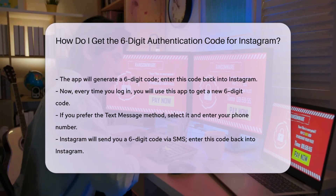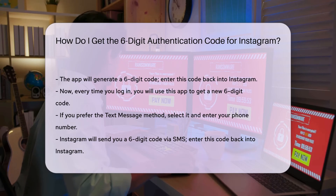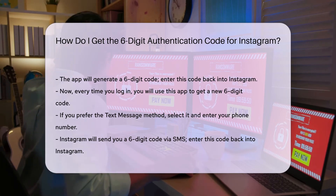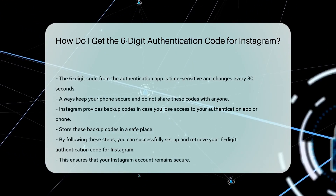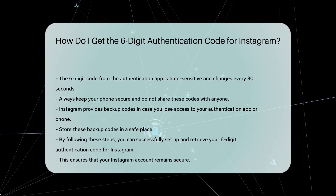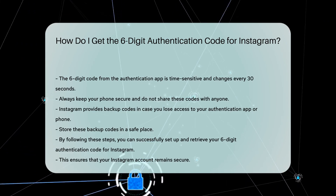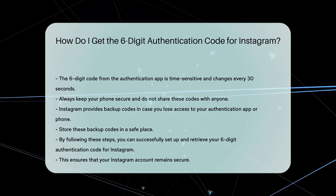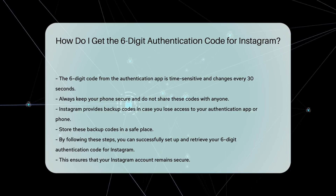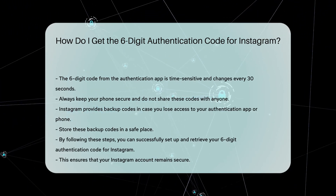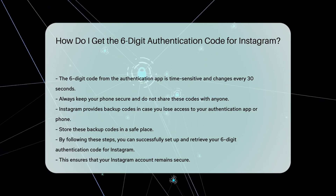Remember, the six-digit code is time-sensitive and changes every 30 seconds if you use an authentication app. Always keep your phone secure and do not share these codes with anyone. In case you lose access to your authentication app or phone, Instagram provides backup codes. These can be found in the two-factor authentication settings. Store these codes in a safe place.